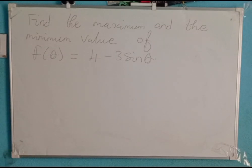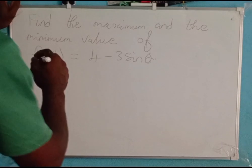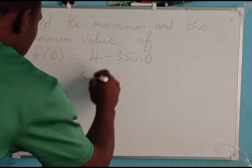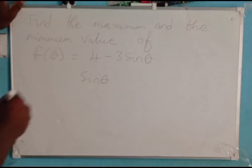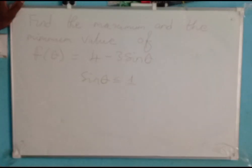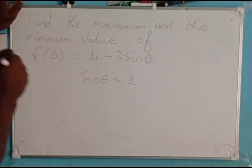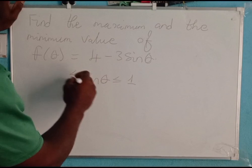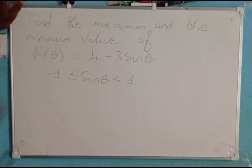First, to answer this question, we know that the sine function has a maximum value of 1 and a minimum value of negative 1. It therefore means if we take sine theta, it has a maximum value of 1 and a minimum value of negative 1. This gives us negative 1 is less than or equal to sine theta, which is less than or equal to 1.